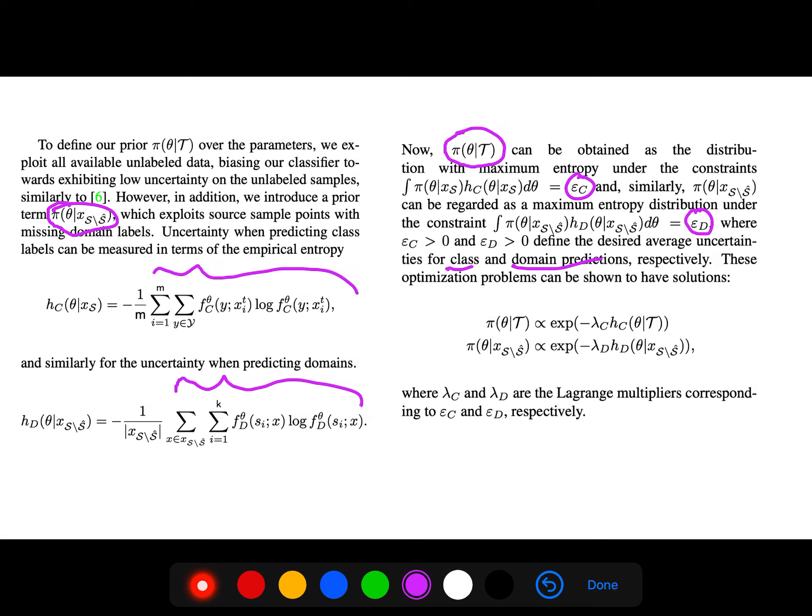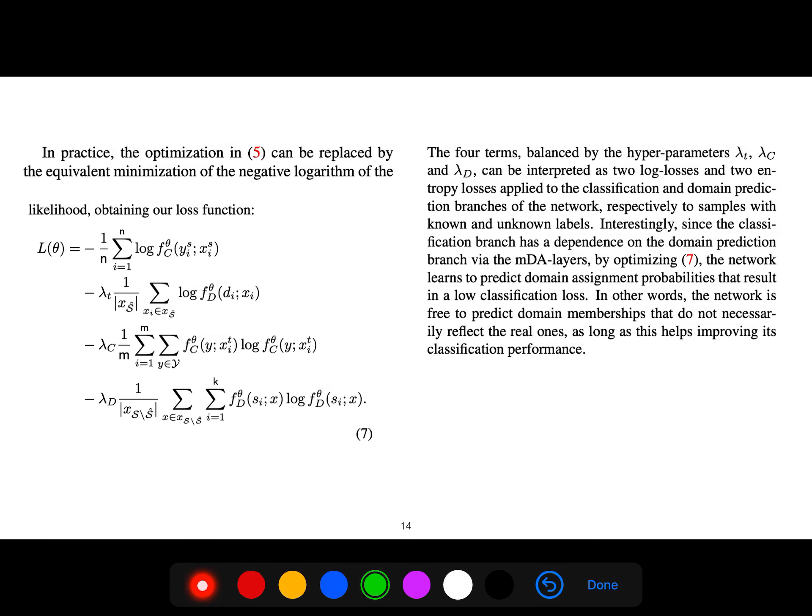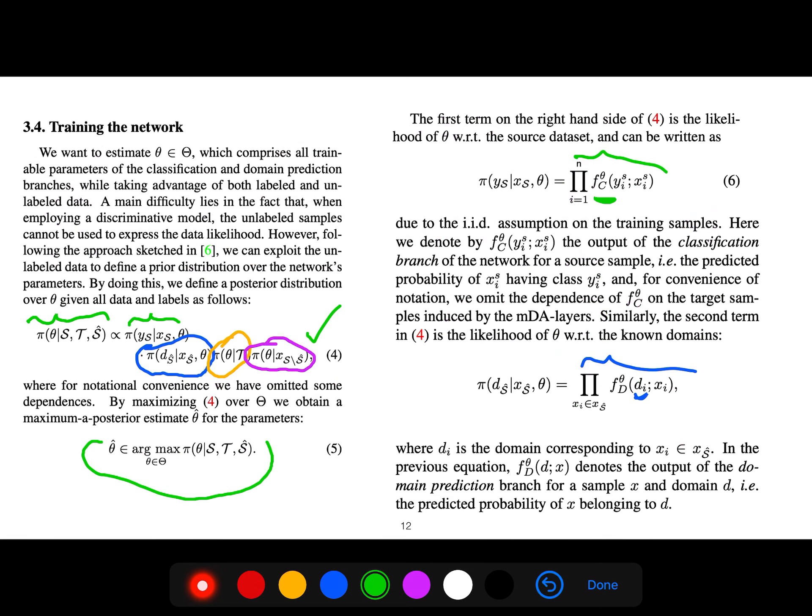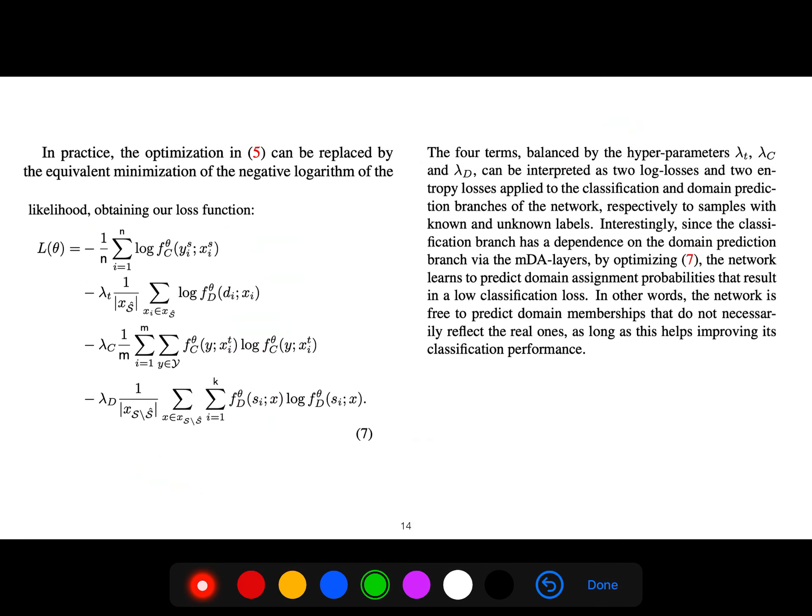So if you work on the optimization, you will see the solution is as explicit as this, and these lambda_C, lambda_D are Lagrange multipliers. Because, you know, we have a constrained optimization, so we need some Lagrange multipliers. In practice, this optimization can be replaced by the equivalent minimization of negative logarithm of likelihood.